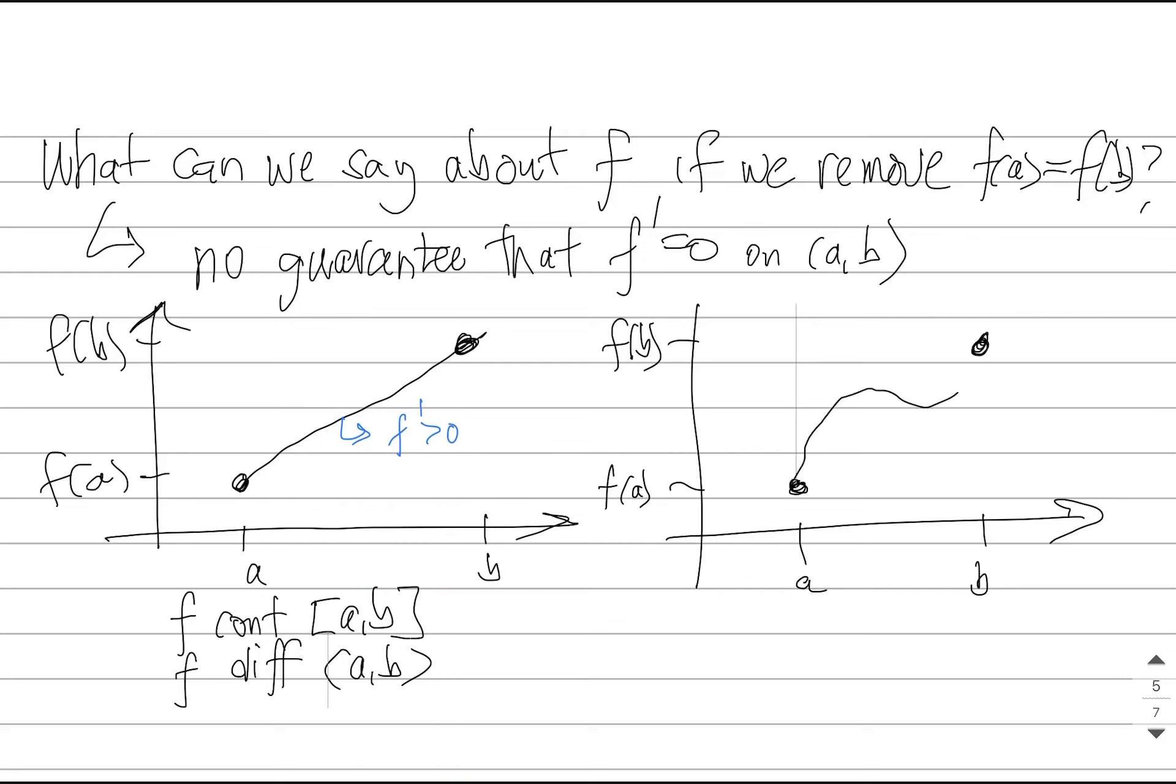But there is something else that we can say about the derivative. In both of these cases, the function that I've drawn is continuous and differentiable on the open interval. If we get rid of the endpoint condition, there's a neat statement we can say. If you take a look here, I'm going to draw a line through the endpoints. The slope of this line is f(b) minus f(a) over b minus a.